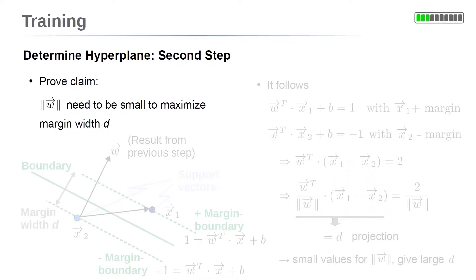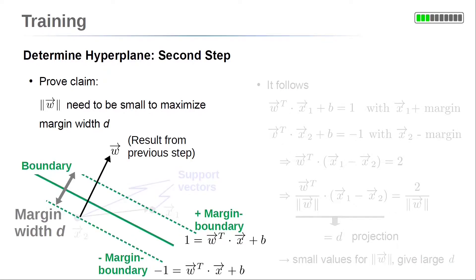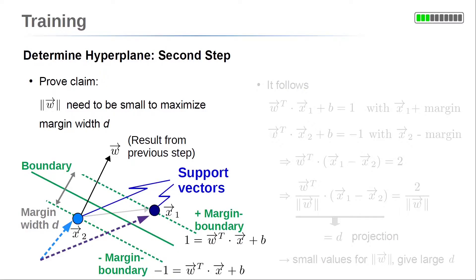In the second step, we show that the length of the parameter vector w needs to be small in order to maximize the margin width d. Maximizing it allows finding the best separation with the largest distances of the data points to the separating boundary. To prove this, we consider data points on the margin boundary — there must be at least a single data point on each margin boundary, otherwise the margin could be larger. The vectors corresponding to these data points on the margin boundaries are the support vectors, which support determining the model by limiting the margin width.